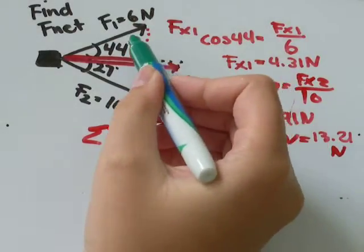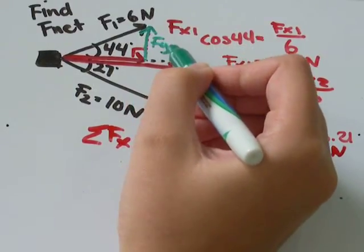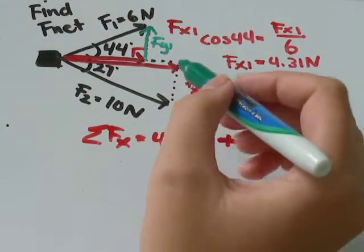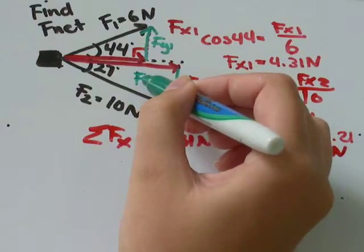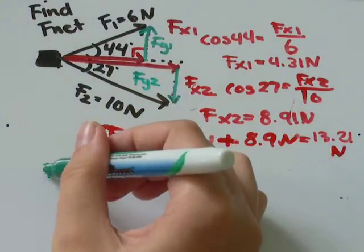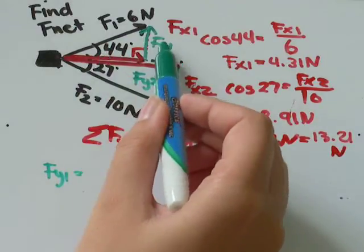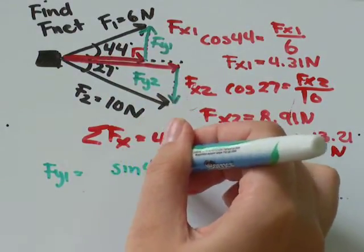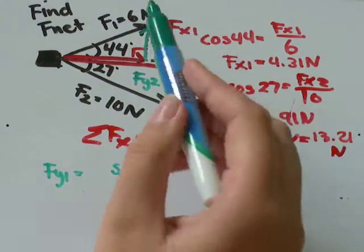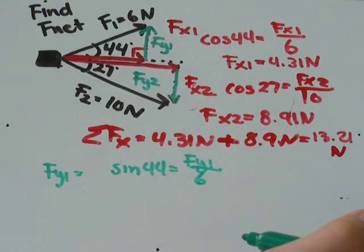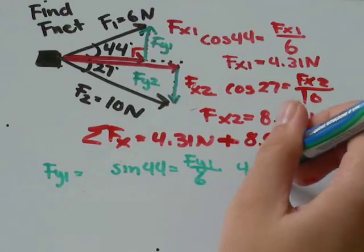So we'll do this vector up here. And I'll call that Fy1. And then next, we'll do the vector down here, and we'll call that Fy2. So Fy1, with respect to the 44 degree angle, it's the opposite side. So we'll use sine of 44 equals Fy1 over hypotenuse, so 6. Sine of 44 times 6. I got that equal to 4.16 newtons.